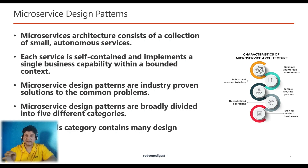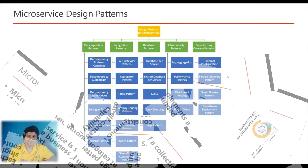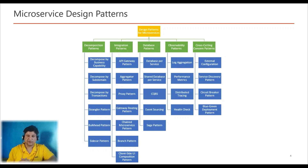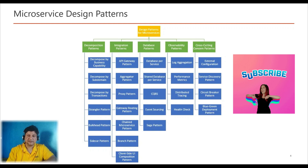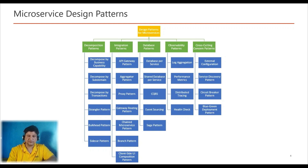These design patterns for microservices are divided into five different categories, each containing many design patterns. Microservice architecture has been built on principles like scalability, availability, resiliency, flexibility, independent autonomous operation, decentralized governance, failure isolation, auto provisioning, and continuous delivery through DevOps.